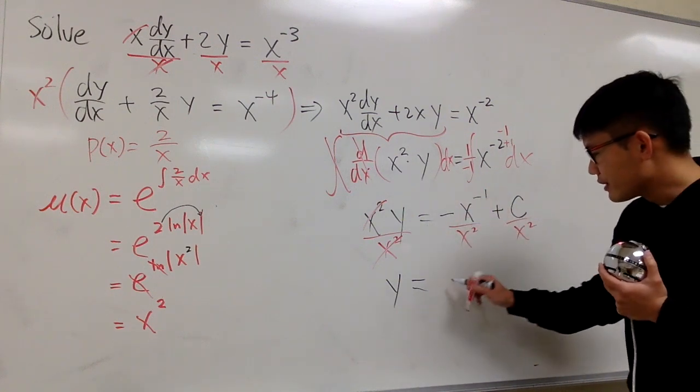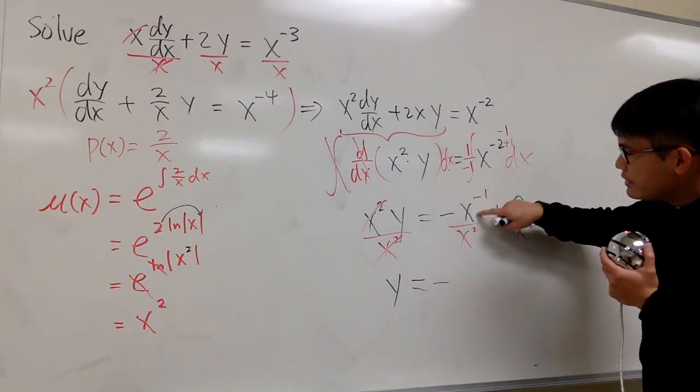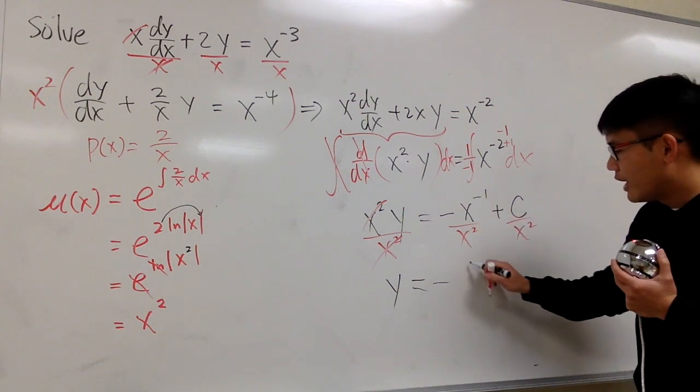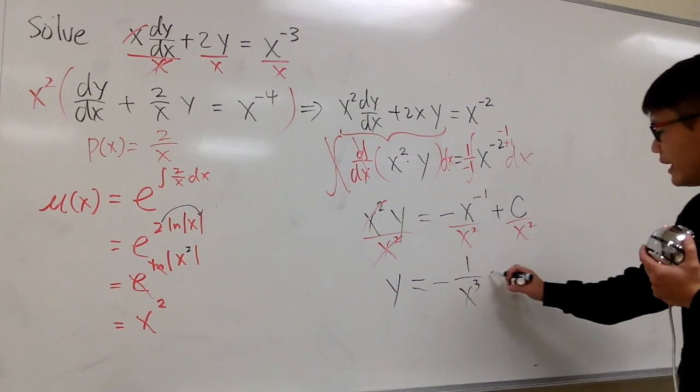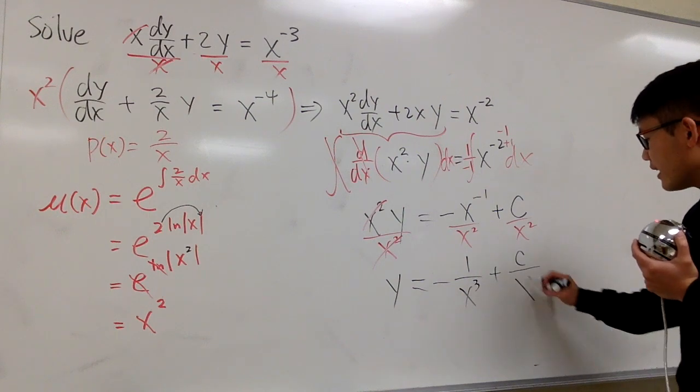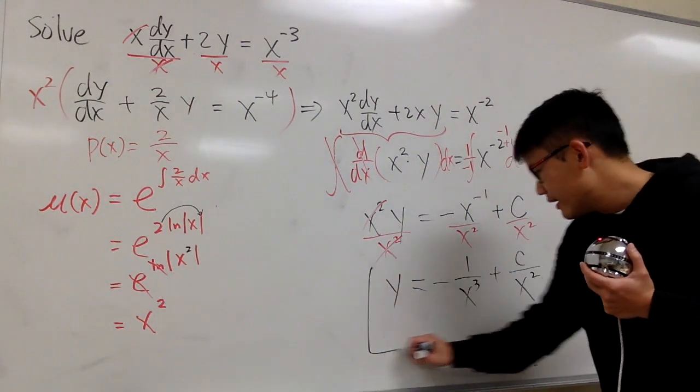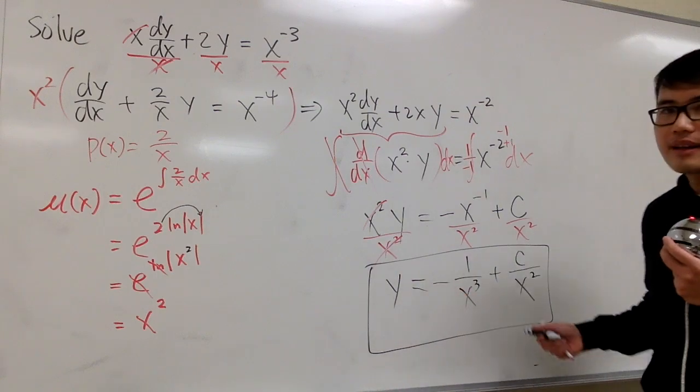This right here. We first put on the negative. x to the negative 1 power over x squared. We have 1 over x to the third power. And we add it with c over x squared. That's it.